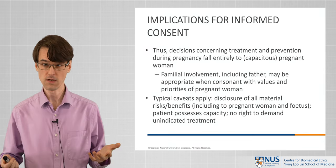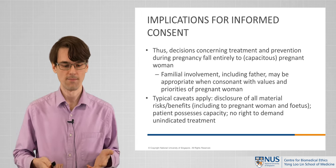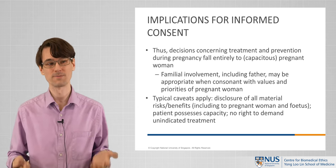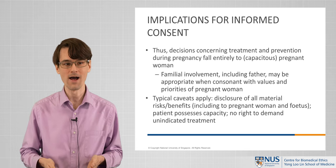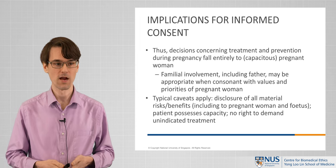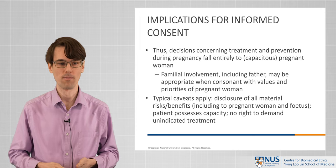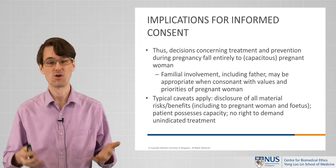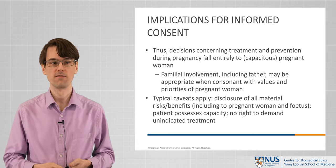This has particular implications for informed consent. On this intertwined model, decisions concerning treatment and prevention during pregnancy fall entirely to a pregnant woman who has mental capacity. Of course, there will be familial involvement in these decisions — in many cases the father will be involved in care decisions and care pathways, and this may well be consonant with the values and priorities of the pregnant woman. But the extent of familial involvement will be at the discretion, generally speaking, of the pregnant mother.